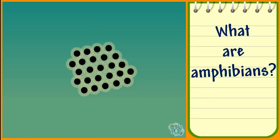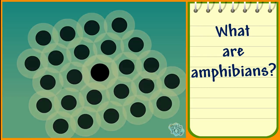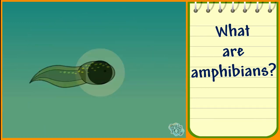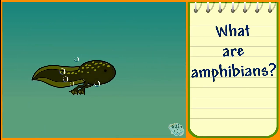They hatch from tiny, soft eggs in the water. When they're tadpoles, they breathe through gills and live underwater.